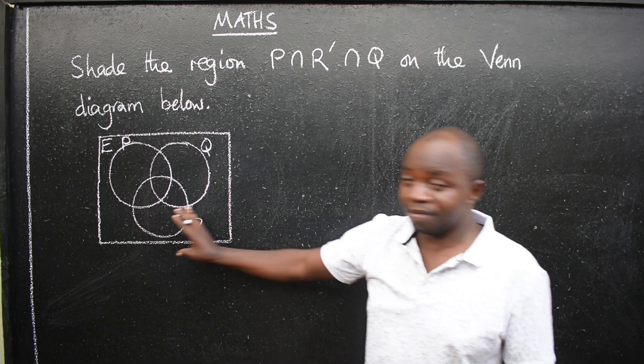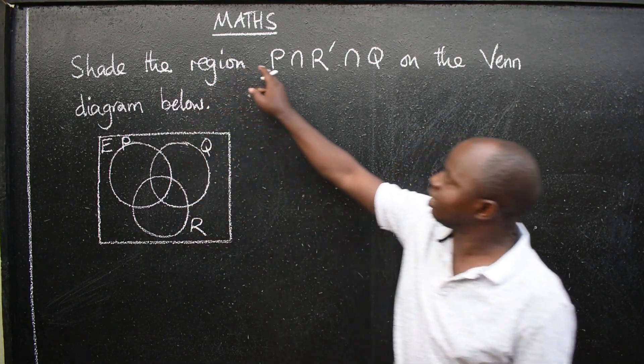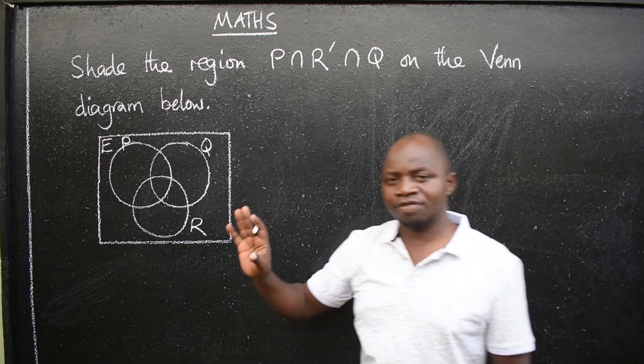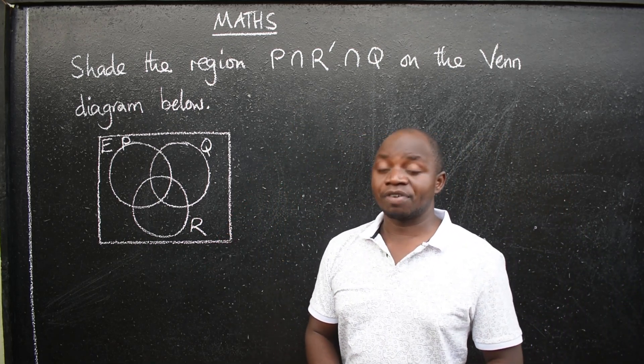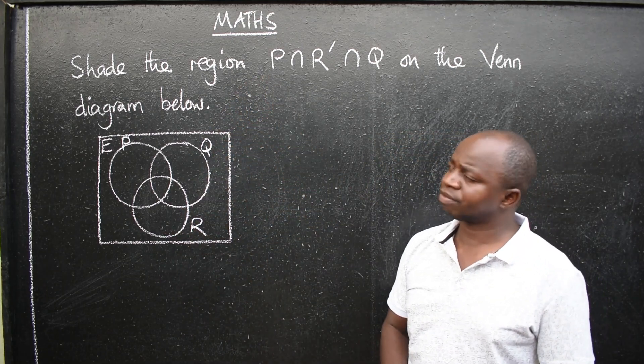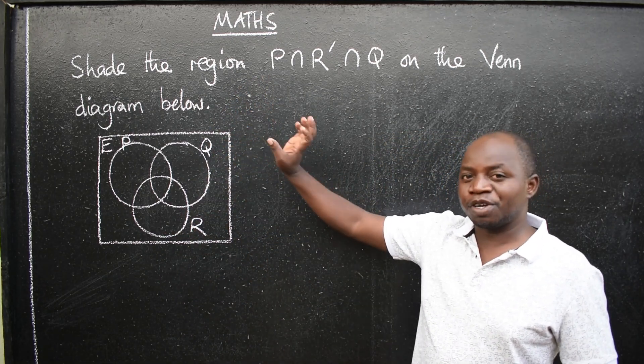Shade the region P intersecting R complement intersecting Q on the Venn diagram below. So we have a Venn diagram here and we are told to shade this notation. This is from 2024, Grade 12, paper 1. I think this was question number 5. It is coming from a topic called sets.